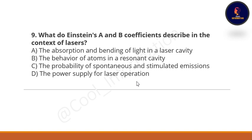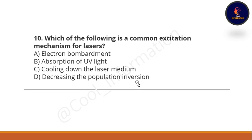Question 9: What do Einstein A and B coefficients describe in the context of a laser? Option A: the absorption and bending of light in a laser cavity. Option B: the behavior of atoms in a resonant cavity. Option C: the probability of spontaneous and stimulated emission. Option D: the power supply for laser operation. The correct option is C, the probability of spontaneous and stimulated emissions.